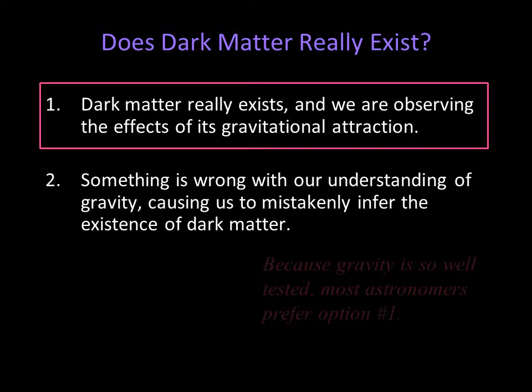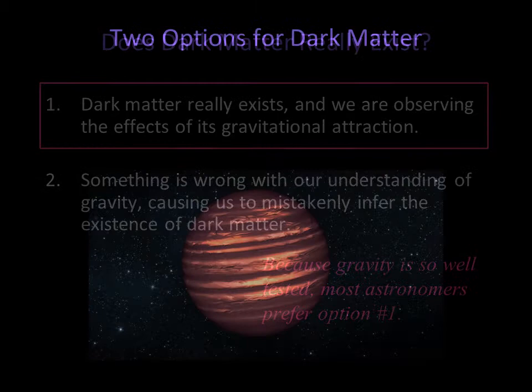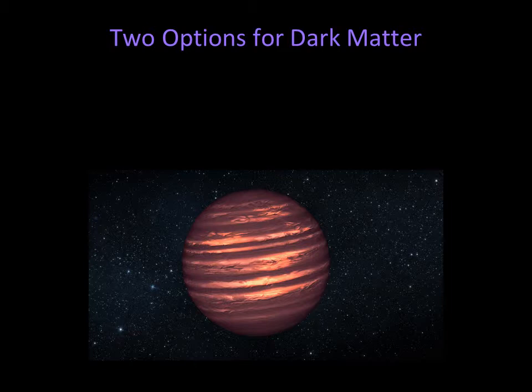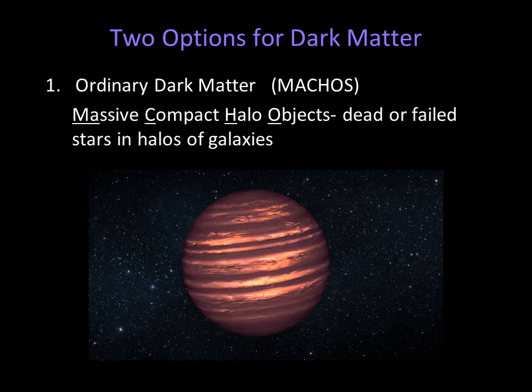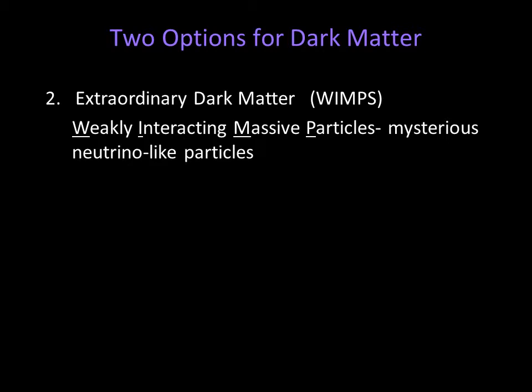If we agree dark matter exists, then what is it made of? There are two basic possibilities. Dark matter could be ordinary matter — the matter we're used to — only we can't see it. A possibility astronomers thought of early on was celestial objects like brown dwarfs, white dwarfs, and black holes. We may not be able to see these objects, but they certainly have mass. Astronomers call these objects MACHOs, which stands for Massive Compact Halo Objects. The second option is that dark matter is some sort of exotic matter. Astronomers often call this possibility WIMPs, which stands for Weakly Interacting Massive Particles. The name implies the particles have mass, but we're talking about very small subatomic particles.